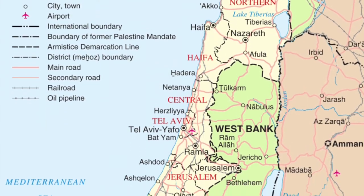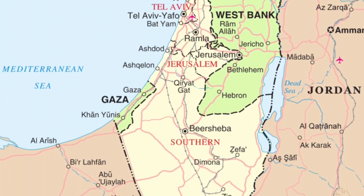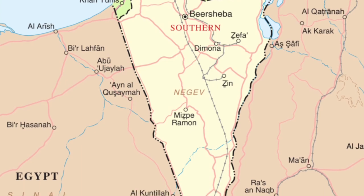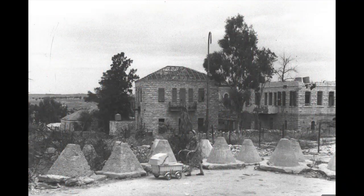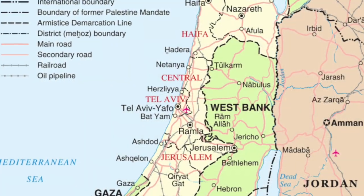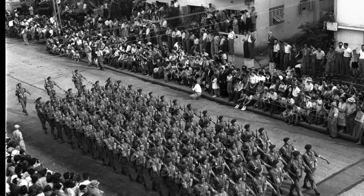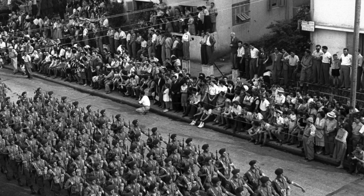Israel now had 600 miles of border to defend, with almost no part of the country being further than 14 miles from a border. In its narrowest point, Israel was only 9 miles wide.